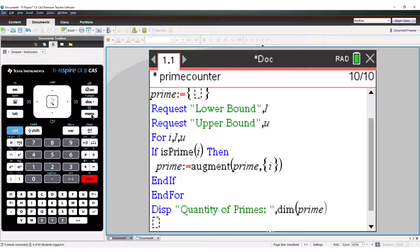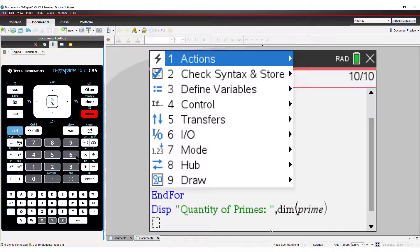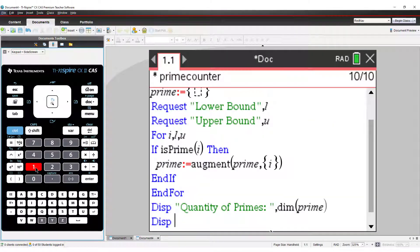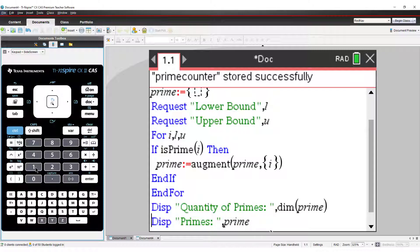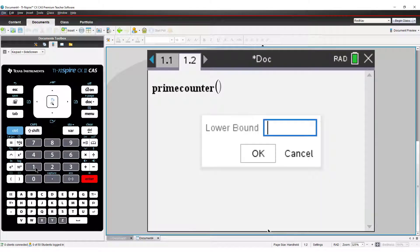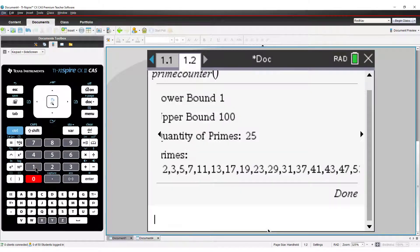I might also want to display all the prime numbers. Now it's time to run the program. Let's search for prime numbers between 1 and 100.